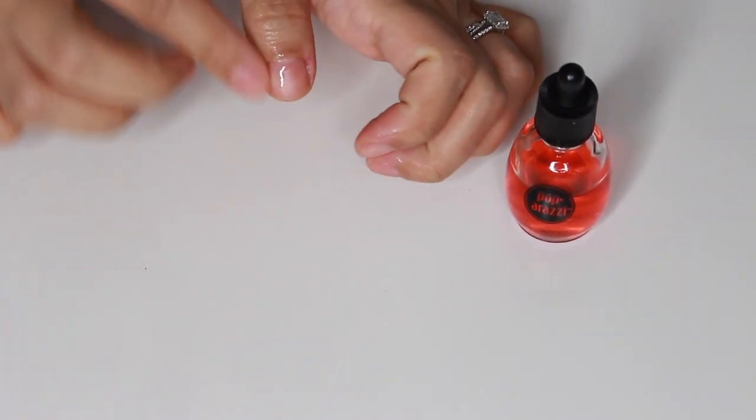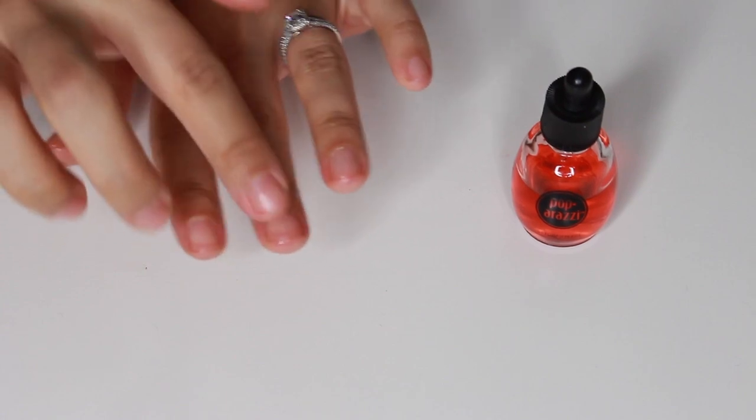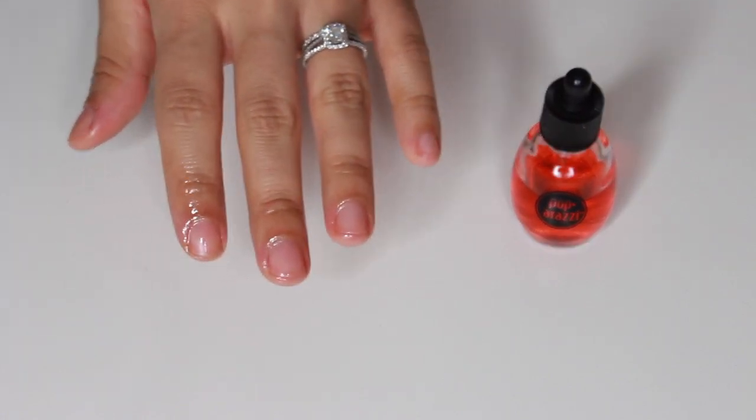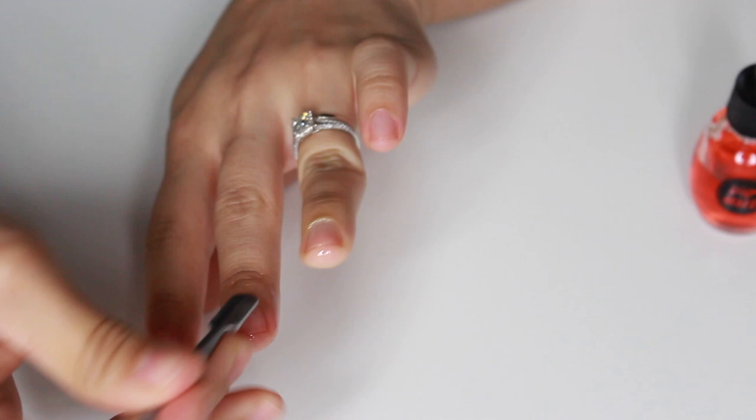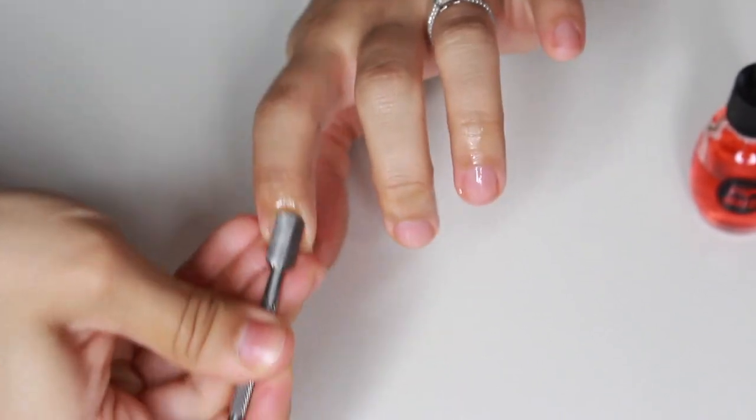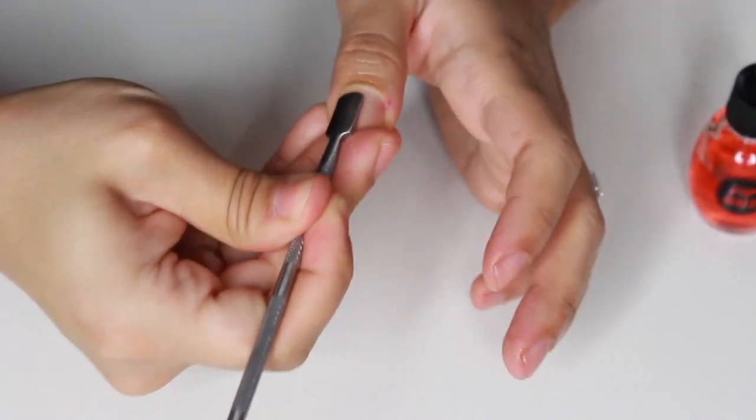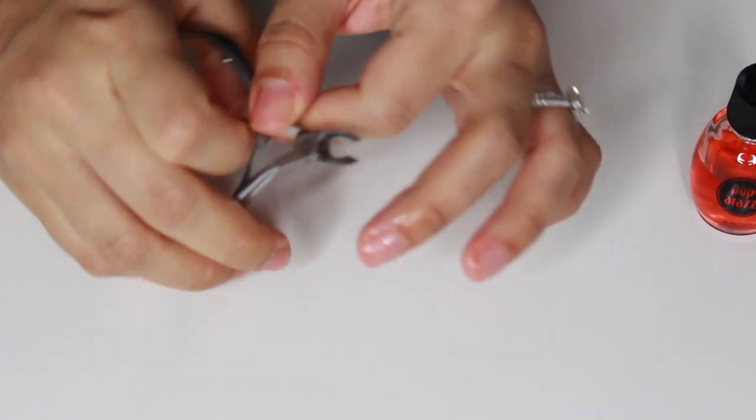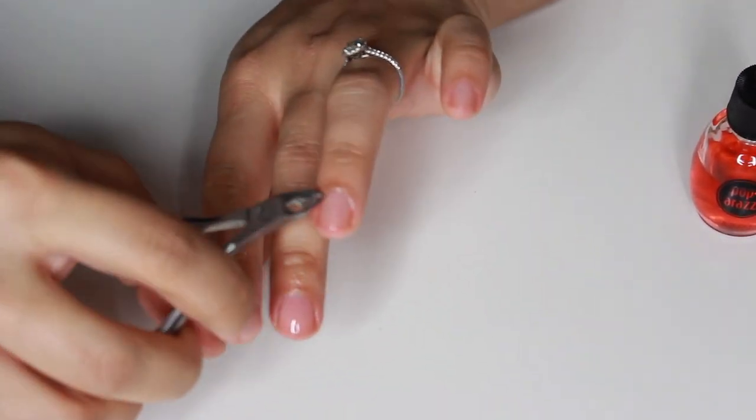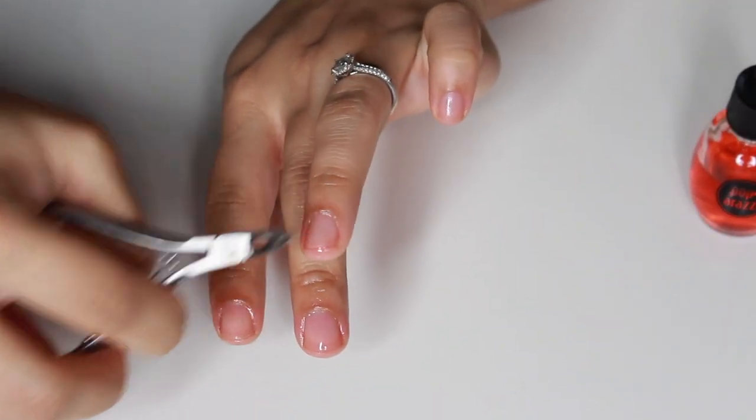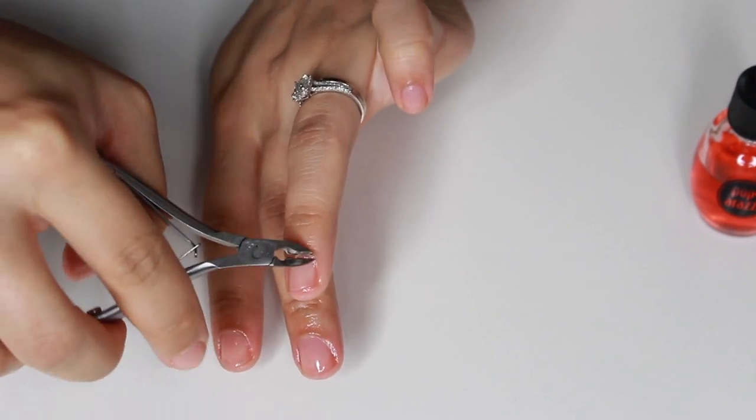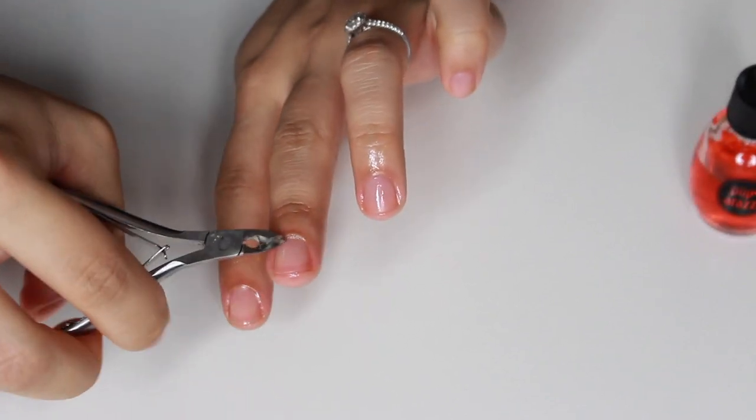We're going to prep our nails by rubbing cuticle oil all over. I'm going to push back my skin and then go in with a cuticle cutter and snip off any extra skin so that we have our nails really nice and prepped. We are treating ourselves to some nails today, doing exactly what they do in the nail salon.